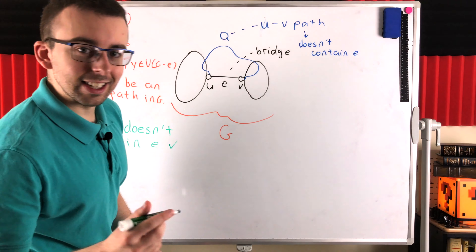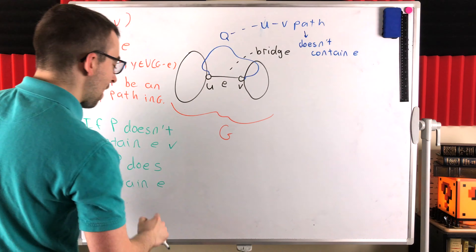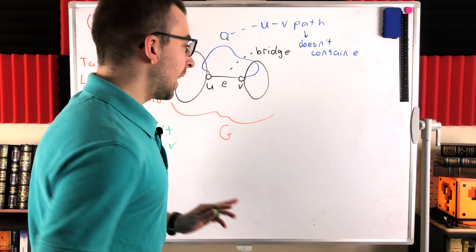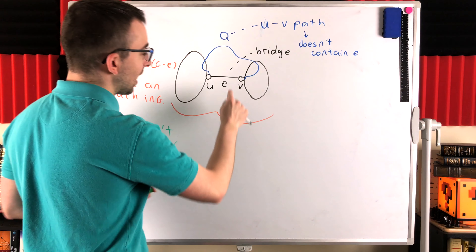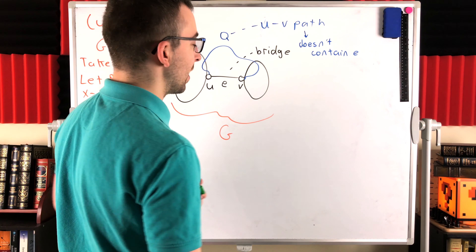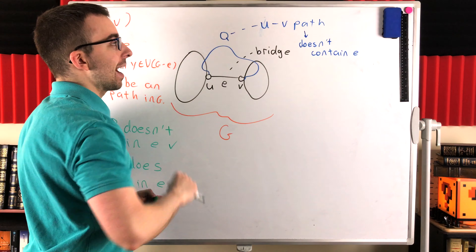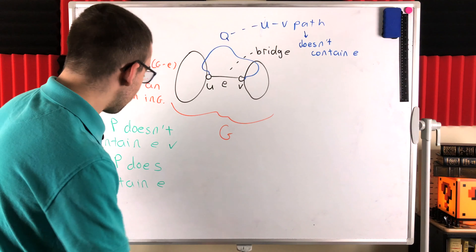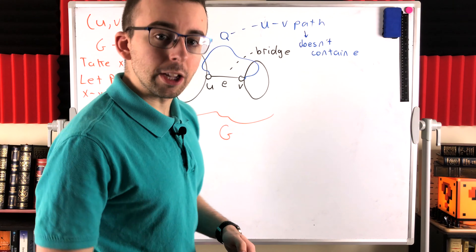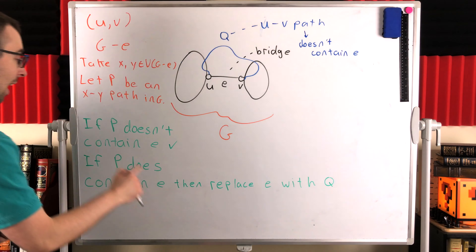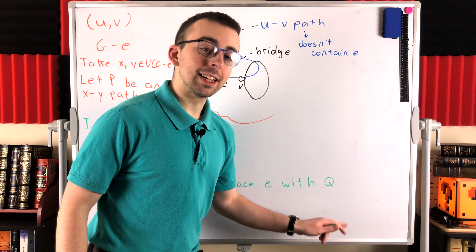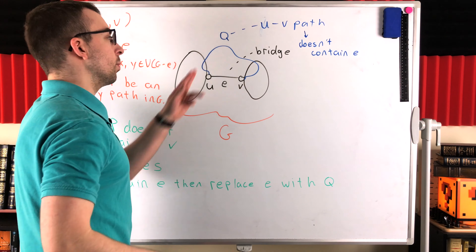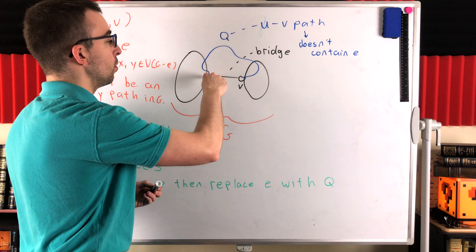What if P does contain E? Then that path does not exist in G minus E, because wherever it encountered that edge is now gone. But we can fix that: the edge E was used to travel either from U to V or from V to U. So we can patch it up by replacing E with our UV path Q — that's our contradiction assumption, that this other path exists, and we know Q doesn't contain E, so we can just insert it. Wherever E appeared in our XY path P, replace it with Q or Q-inverse to travel between those two vertices.